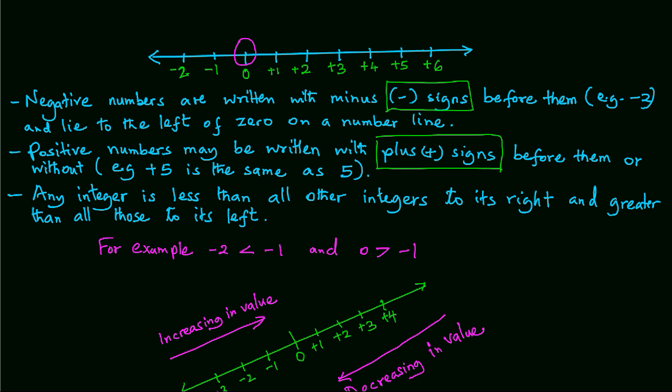Or at times, they can be written without the plus sign. So in that case, positive 5 is the same as 5 without any sign.